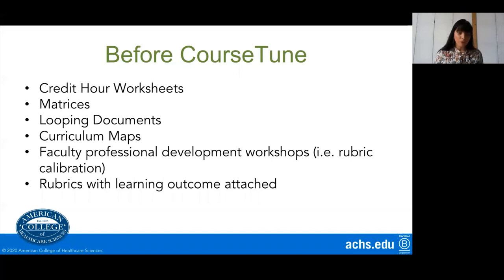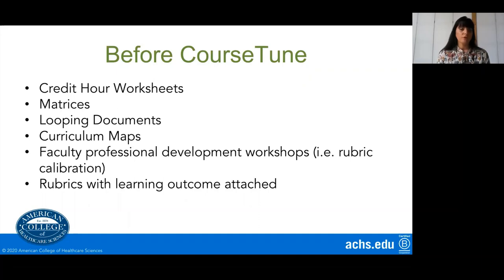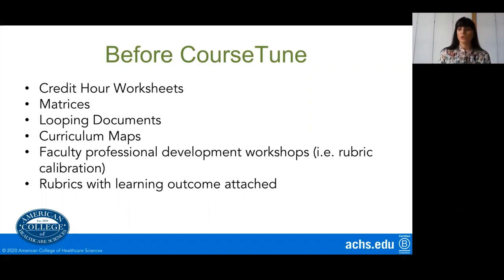Before CourseTune, we were tracking all of this information through several different documents and platforms: credit hour worksheets, course matrices, looping documents and curriculum maps as our previous alignment documents. Ashley and I were also conducting faculty professional development workshops around rubric calibration, which related to our outcomes alignment and assessment component. We were also working with rubrics in which we embed our learning outcomes into our grading rubrics. These were all the areas where we were tracking outcomes and assessment within our curriculum before CourseTune.